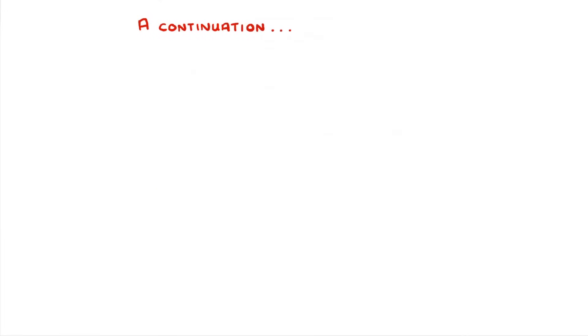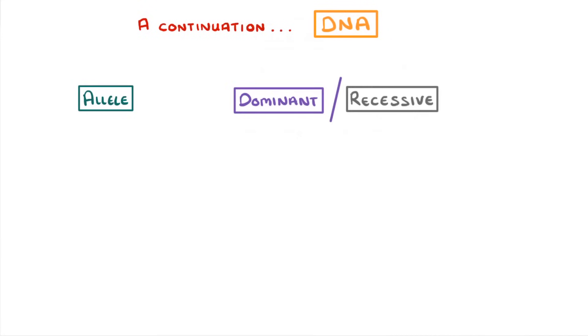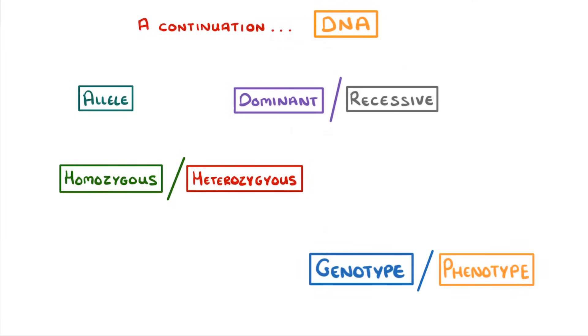Today's video is sort of a continuation of our last video on DNA. We're going to take a look at a whole bunch of different terms: what an allele is, the differences between dominant and recessive, homozygous and heterozygous, and also genotype and phenotype.